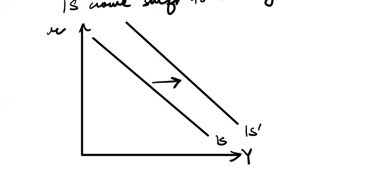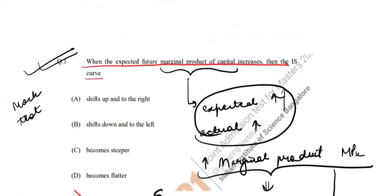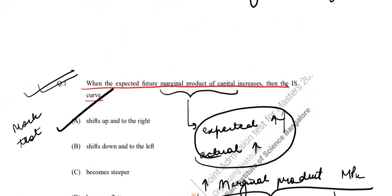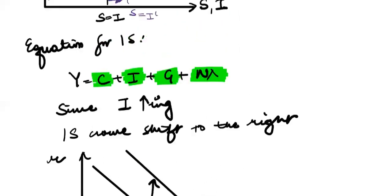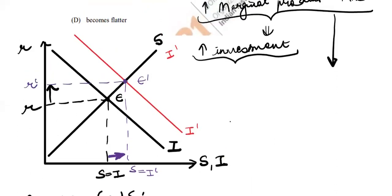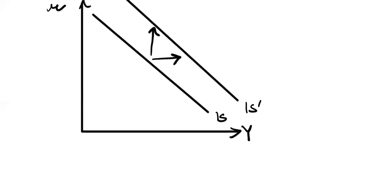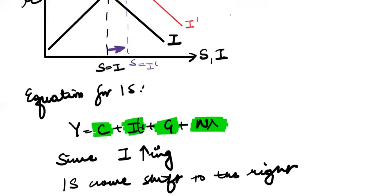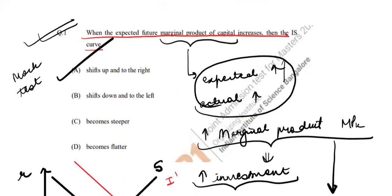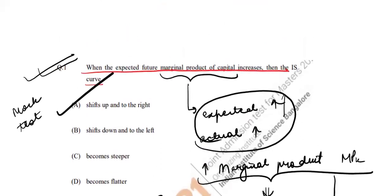So the answer for this question is that the IS curve shifts up and to the right. You can say it is shifting to the right, or you can say it is shifting upwards — for the same output, the interest rate is higher. Alternatively, for the same interest rate, output is higher, because investment is increasing. So the correct answer is A.